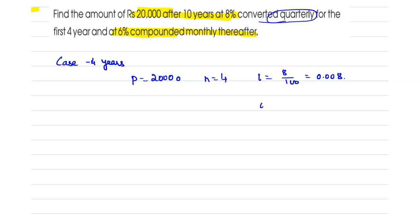And it is given that the rate of interest is converted quarterly, so the new interest will be i1 is equal to 0.08 divided by 4, which is 0.02.